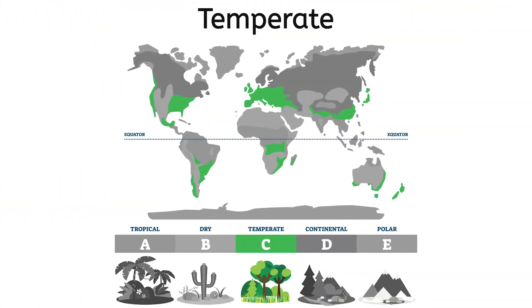Unlike the previous climates, temperate climate zones do not have the same weather patterns year-round. Instead, locations with a temperate climate have distinct seasons. Places like Europe and parts of the United States fall into this category. It's sweater weather in one season, then sandals in the next. If I lived here, my closet would have a little bit of everything.